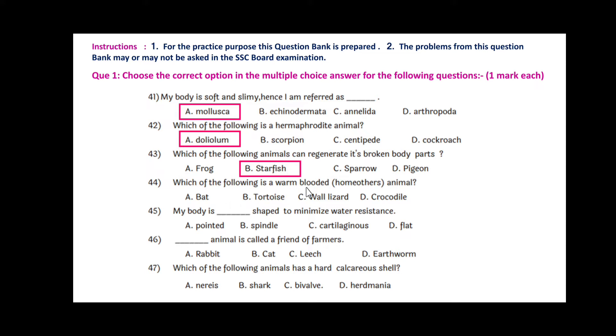Question 43: Which of the following is a warm-blooded, that is homeothermic animal? That will be bat. Question 44: My body is dash shaped to minimize water resistance. That is spindle shape, so the answer is option B, spindle.